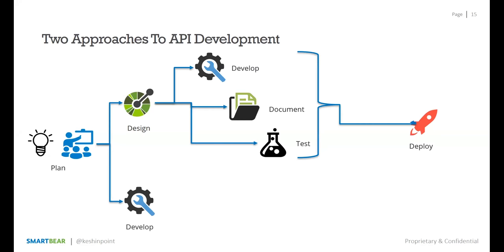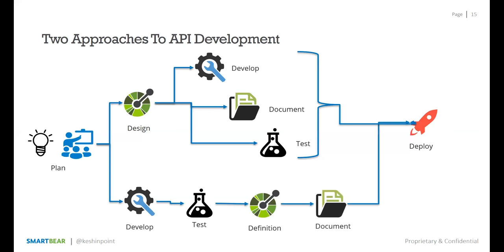However, a large part of the market still has existing APIs for which they want to generate definitions. In many cases there isn't time for a full design phase before implementation. In that code-first approach, you plan the API, develop it, test it, then generate the definition from the existing implementation, document it, and deploy. The key question is: how do you generate an OpenAPI definition from an existing implementation? Or, if you already have an OAS 2.0 file, how do you get a 3.0 file from it?